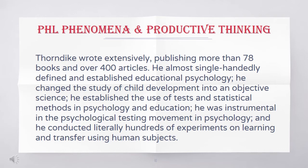Thorndike wrote extensively, publishing more than 78 books and over 400 articles. He almost single-handedly defined and established educational psychology. He changed the study of child development into an objective science. He established the use of tests and statistical methods in psychology and education, and was instrumental in the psychological testing movement. He conducted literally hundreds of experiments on learning and transfer using human subjects.